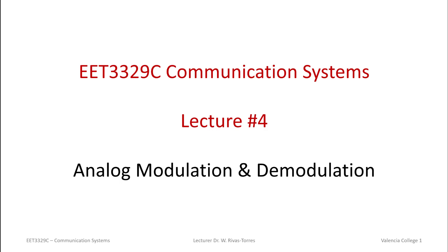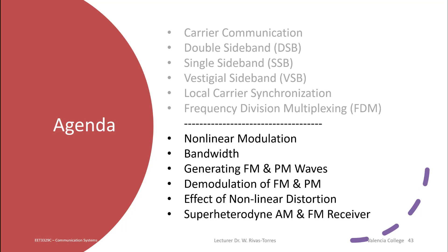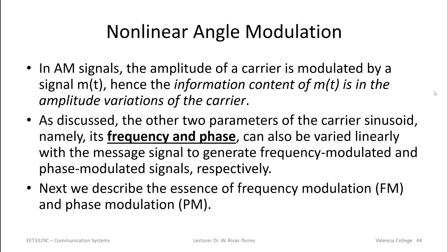Welcome to EET 3329C Communication Systems course at Valencia College for the fall semester of 2020. This is your instructor Dr. Rufredo Rivas Torres. We will now talk about lecture number four, part two, which covers analog modulation and demodulation. The specific topics for today include nonlinear modulation, also known as angle modulation, bandwidth of signals, how to generate both FM and PM waveforms, how to demodulate FM and PM, some effects of nonlinear distortion, and the superheterodyne AM and FM receiver.